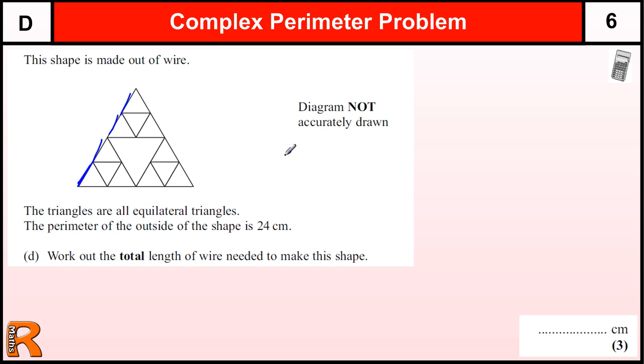The outside of the shape is 24 and we've got one, two, three, four, and then another four and another four. So we've got three times four, which is 12, around the sides. And 12 equals 24 centimeters, so one side equals two centimeters.